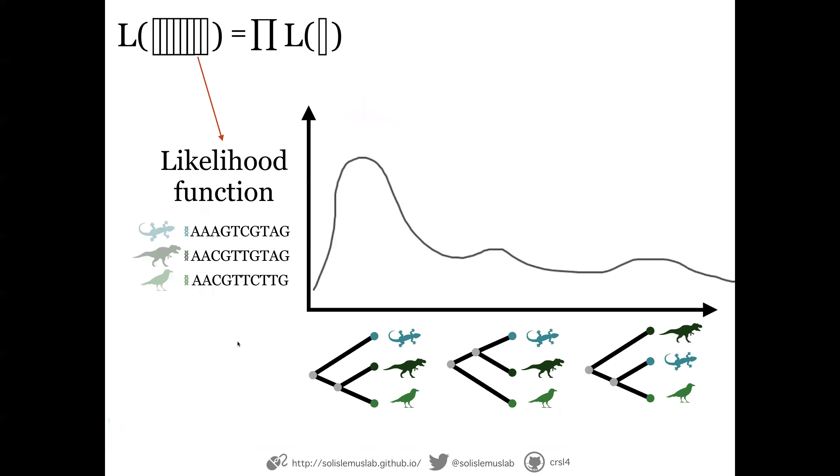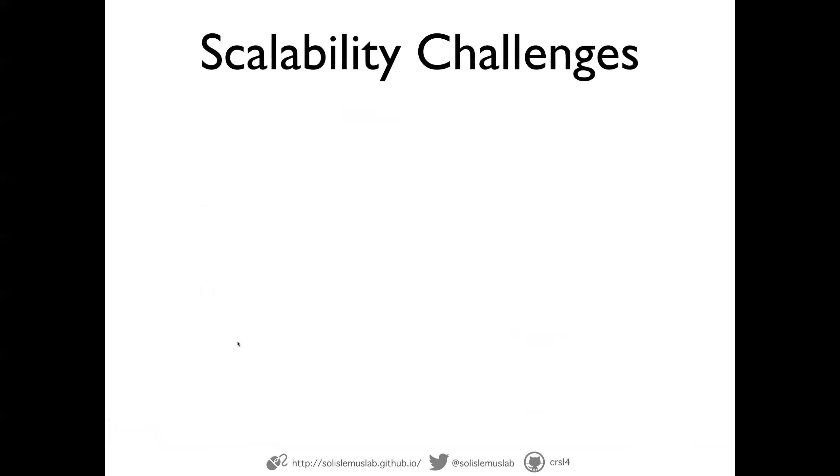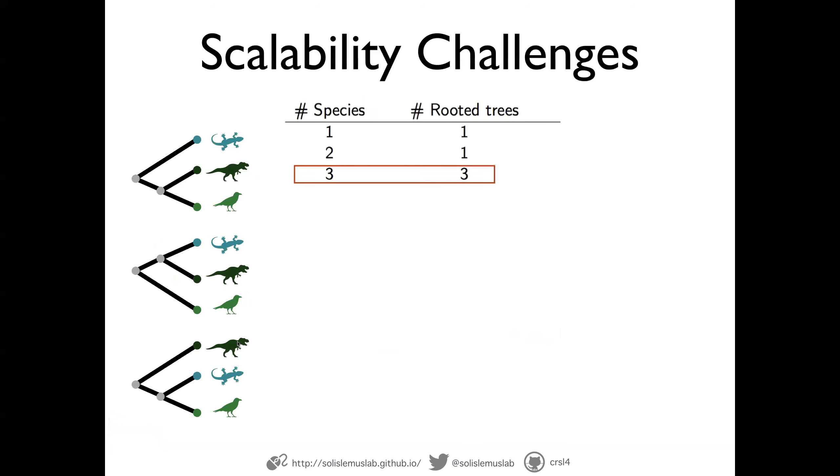So with the computation of the likelihood, that was just for one site, we assume they're independent. So we multiply the likelihood for all the different sites. And there are, of course, many challenges because for this case, when there are only three species, there are three possible trees. So of course, we can evaluate the likelihood for all three options.